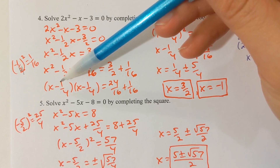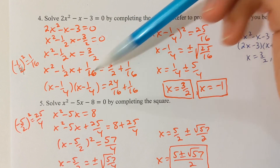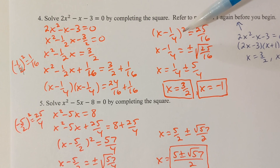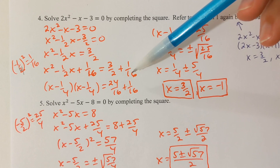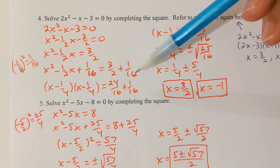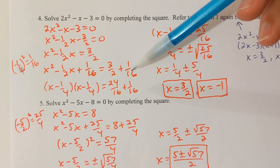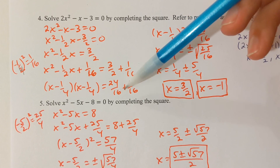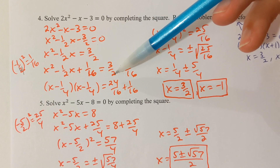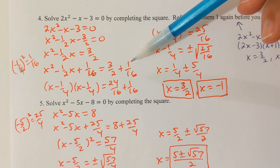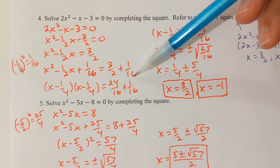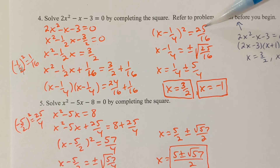x - 1/4 times x - 1/4 is (x - 1/4)². On the right, I'll need to get the common denominator, which is 16. 3/2 is the same as 24/16, plus 1/16 gives 25/16.